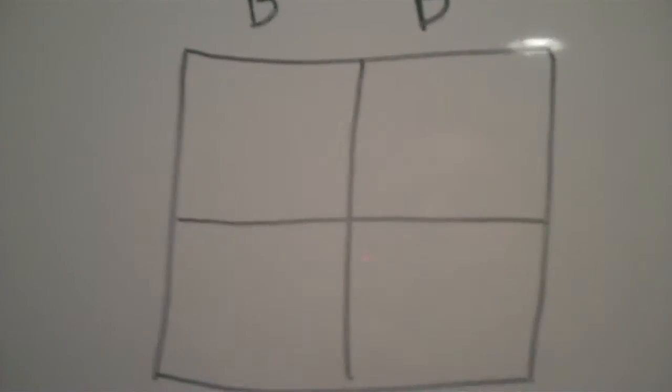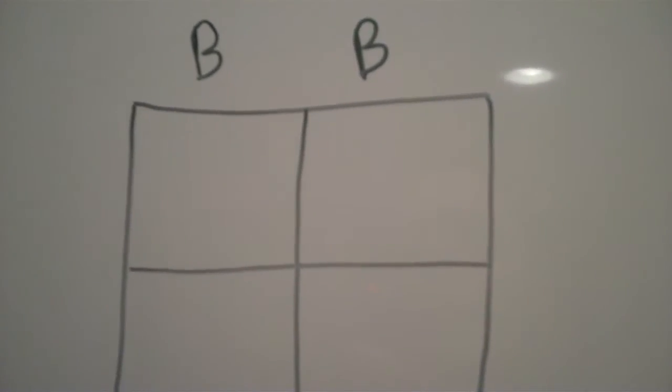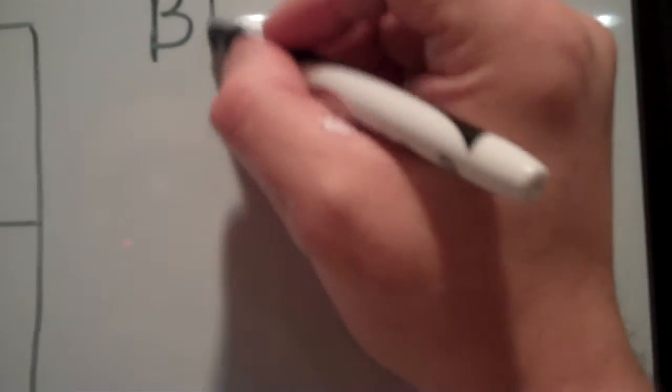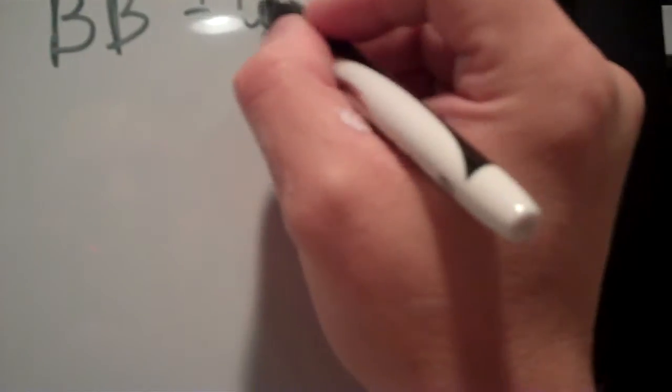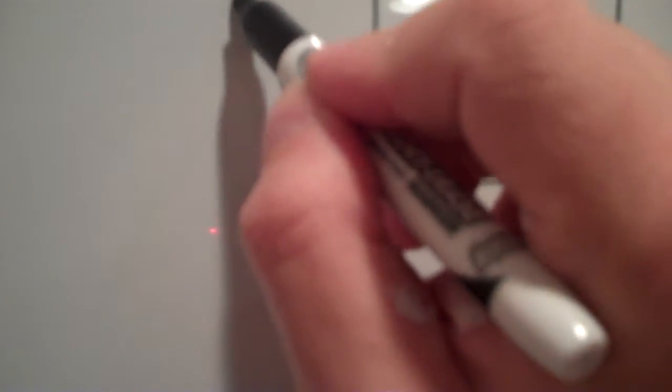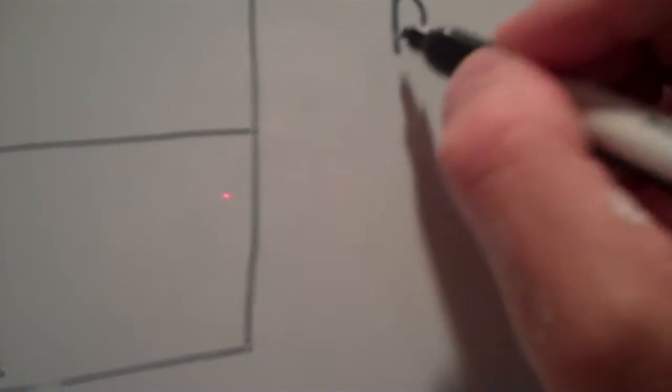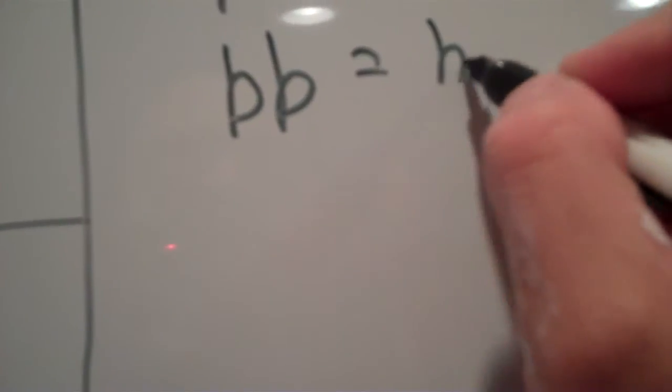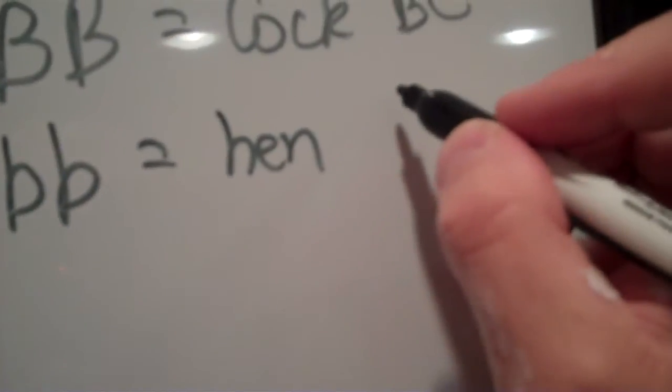So I'm going to use big B's to represent the cock. Blue check. Now on this side we're going to use for the hen and we believe her to be recessive. Now we don't know this but we're theorizing it. She is a blue bar.